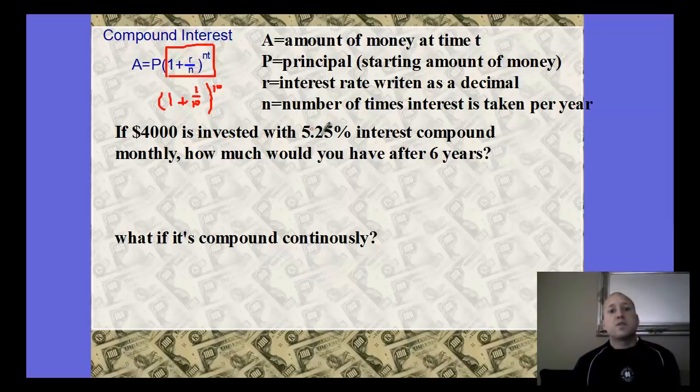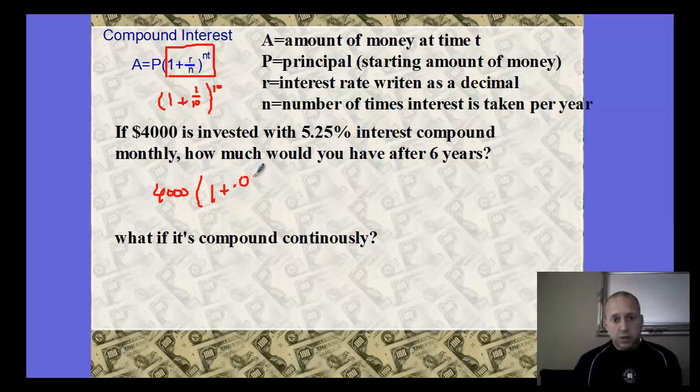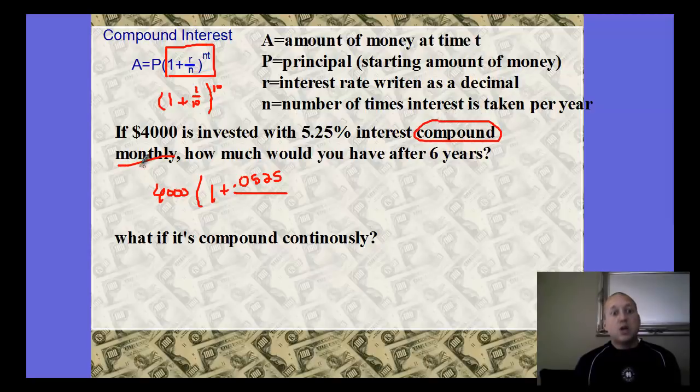If $4,000 is invested with 5.25% interest compound monthly, how much would you have after six years? Our starting amount, $4,000 is our p, times 1 plus our interest rate, which is a decimal, so be careful doing that, 0.0525, over n. How many times would this be compounded in a year? It's compound monthly, so that word compound, you need to look for that. What comes after it or before it will tell you what the n value is. Monthly would be 12 times in a year. So I put 12, all raised to the 12 times how many years have gone by, so 6.